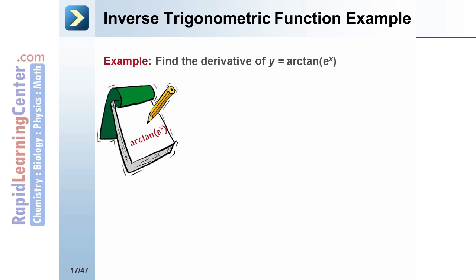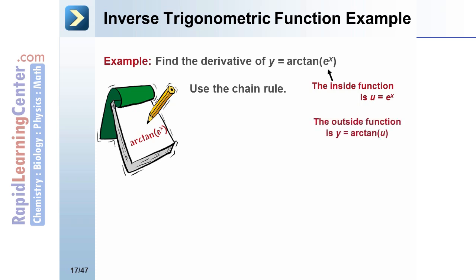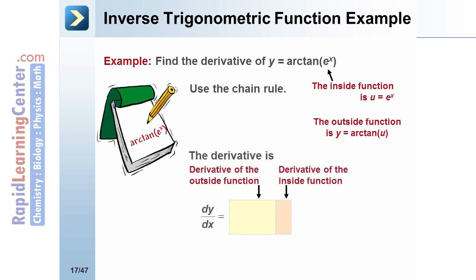Let's look at another example for an inverse trigonometric function: find the derivative of y equals the arctan of e to the x. We'll use the chain rule, where the inside function u equals e to the x and the outside function is y equals arctan of u. The derivative of the outside function, following the arctan formula, is 1 divided by 1 plus e to the x quantity squared. The derivative of the inside function is e to the x. This makes our final answer e to the x divided by 1 plus e to the 2x.